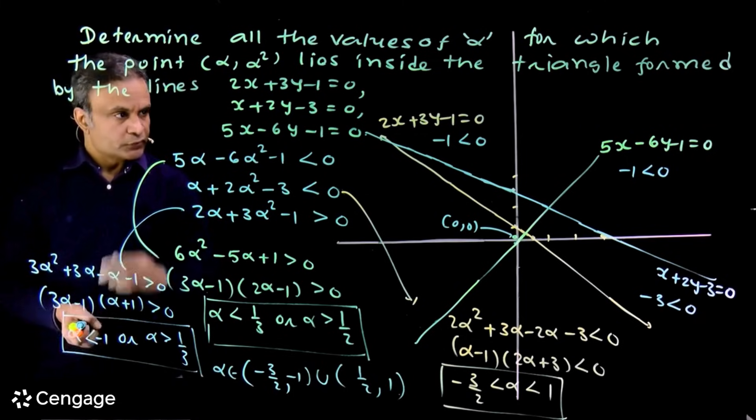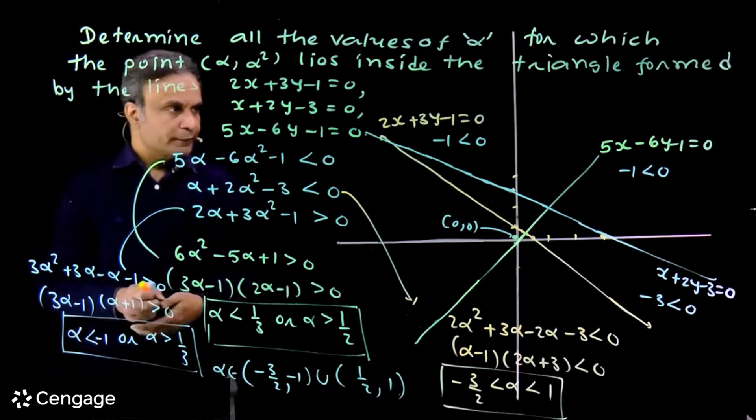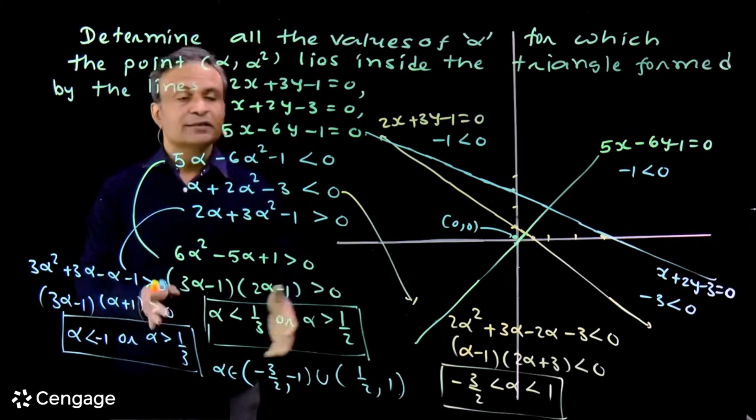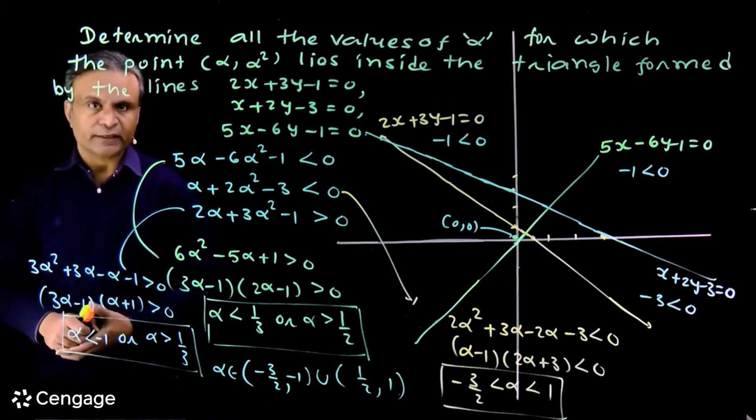So the answer is alpha belongs to (minus 3/2, minus 1) union (1/2, 1). We solved this question by plotting the straight lines on the coordinate plane and using the origin as a reference point to determine the required inequalities.